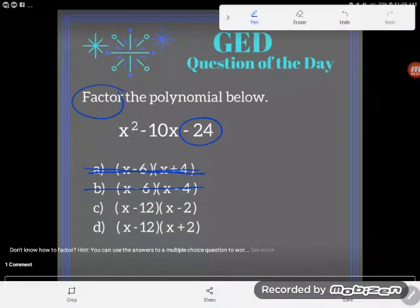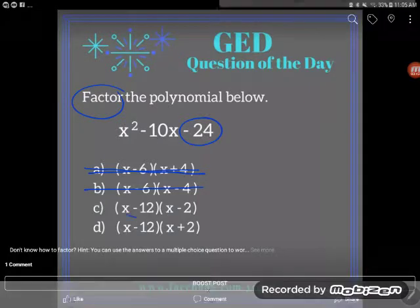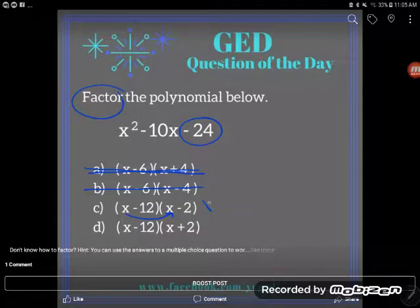Okay, so let's take a look at the next one. Again, I'm going to just multiply this out to see if it simplifies to the expression above. So x times x is x². x times negative 2 is negative 2x. Negative 12 times x is negative 12x.